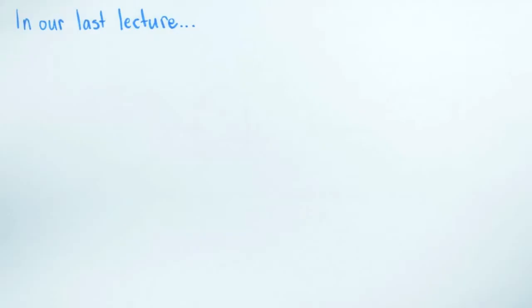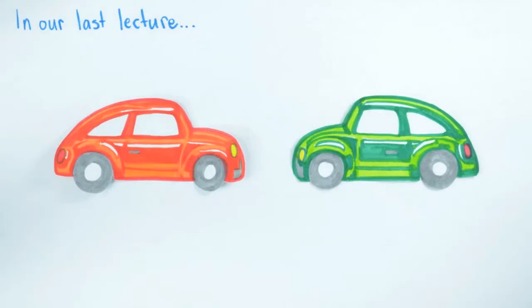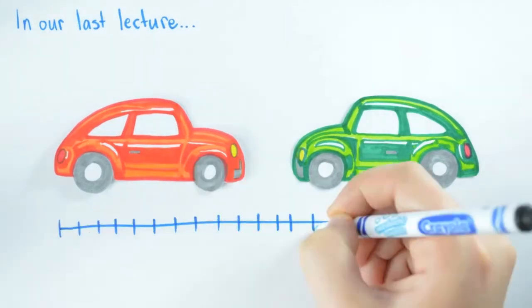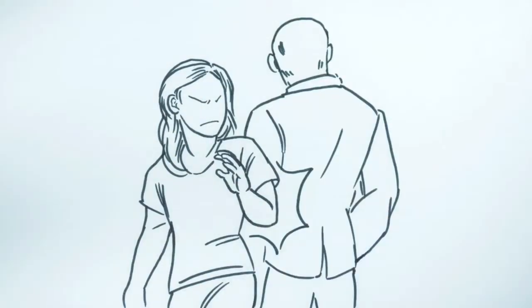In our last lecture we considered the multi-particle situation of a head-on collision. In that case all the action happened in one spatial dimension. Collisions in the real world are frequently not head-on, which means the motion before and after the collision happens in more than one spatial dimension.